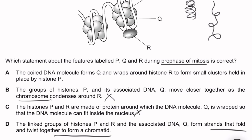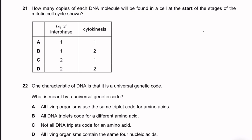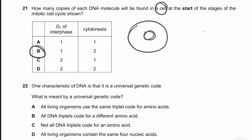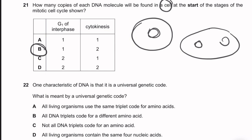Question 21: How many copies of each DNA molecule are found in a cell at the start of G1 and at the start of cytokinesis? At the start of G1, there is one copy. At the start of cytokinesis, the cell has two nuclei (DNA has been replicated and segregated) but has not yet divided, so there are two copies within one cell. Answer: 1 and 2.